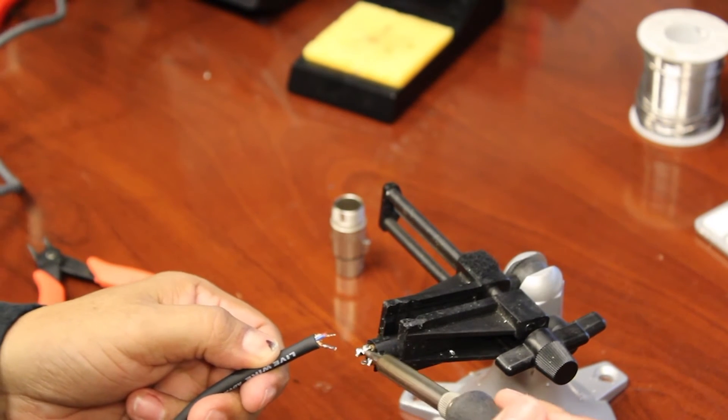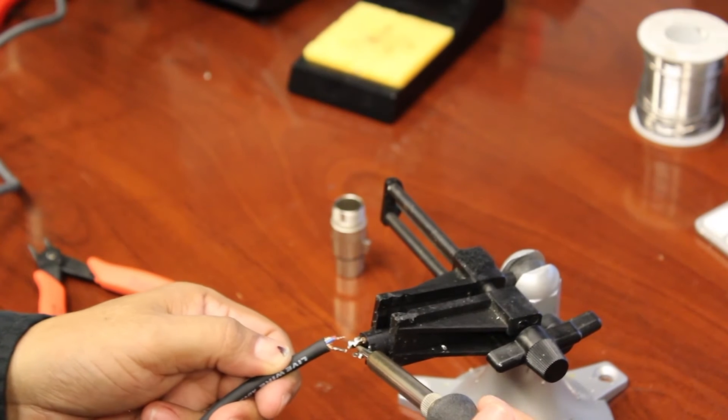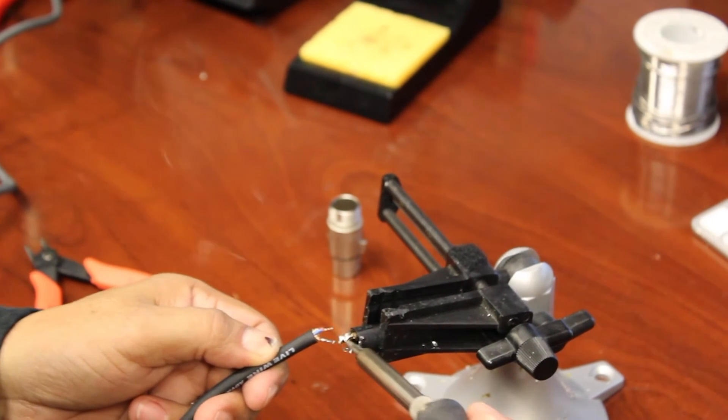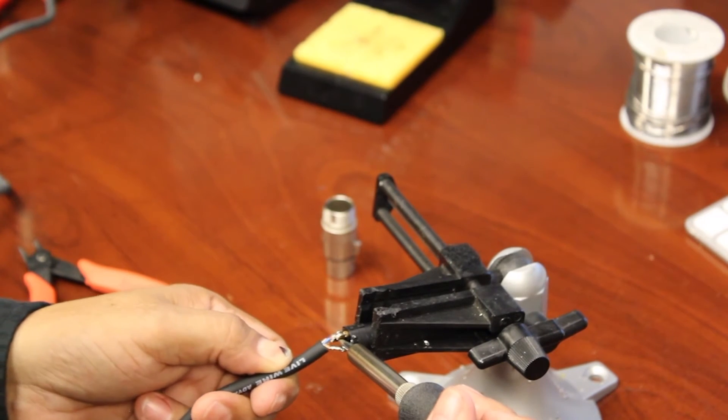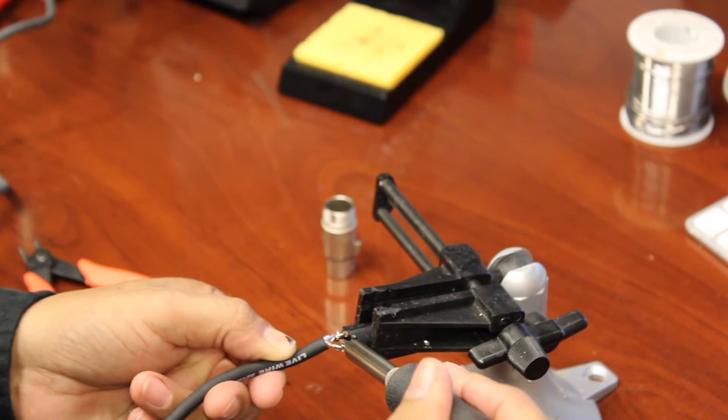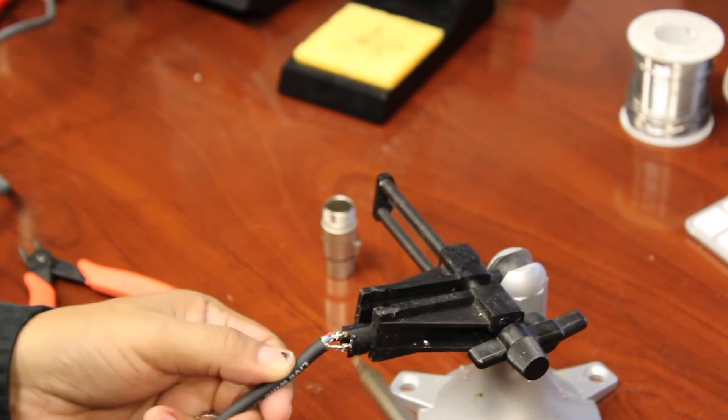Let's go ahead and solder the wire onto the connector. And what you do is you hold the soldering iron to the post, get the post nice and hot and it melts the solder inside. And once that happens, place the wire inside it. Take the soldering iron away and let the solder cool off. You got a nice solder joint.